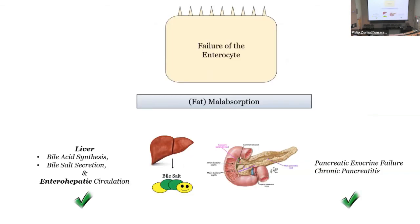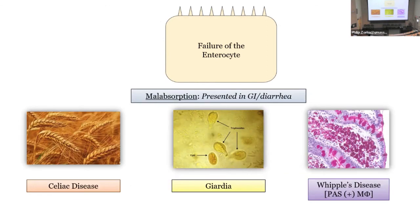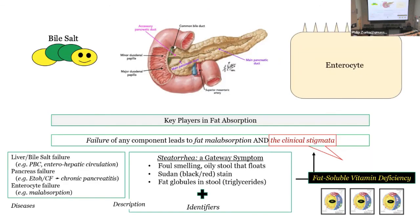We've knocked off the pancreas and the liver, which leaves us with the enterocyte. We'll cover malabsorption in GI as well — there's overlap. The main malabsorptive conditions involving enterocyte failure are celiac disease, Giardia, and Whipple's disease. Then we get to the stigmata — really the discussion about the fat-soluble vitamins.